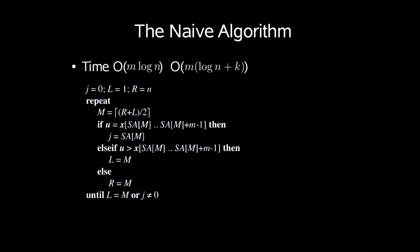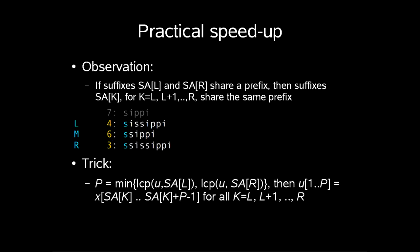So can we do any better? How about in the worst case, or maybe just in practice? In practice, we can observe that if suffixes SA of L and SA of R share a prefix, then suffixes SA of K, for K being L, L plus 1, and so on, up to R share the same prefix. Like you see in this example, where suffixes 4, 6 and 3 share the prefix S.